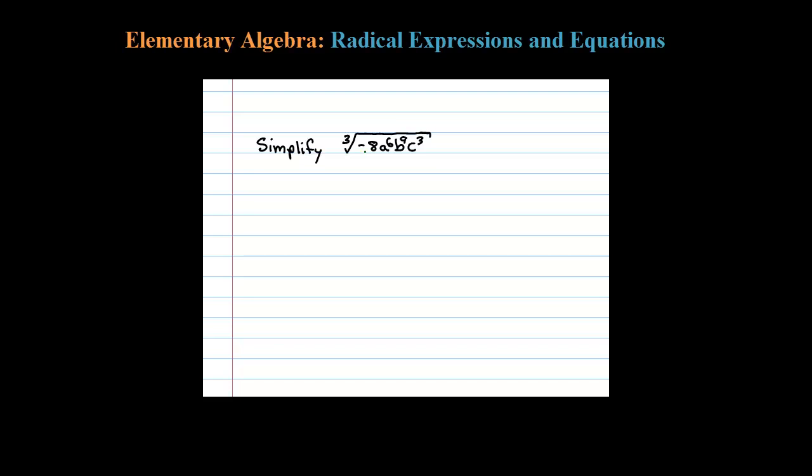Here we're asked to find the cube root of this expression. The first thing I want to focus on is negative 8. What cubed is going to equal negative 8? Cube roots are allowed to be negative, so you can easily see negative 2 cubed is negative 8. That's negative 2 times negative 2 times negative 2. So right away I can write the cube root of negative 8 is negative 2. Then you want to look at the next term.